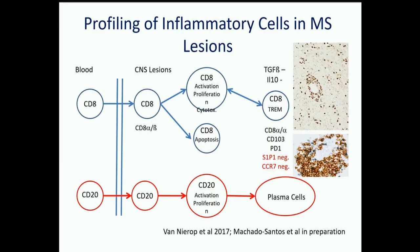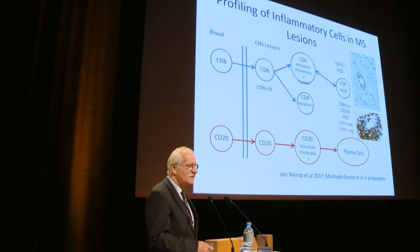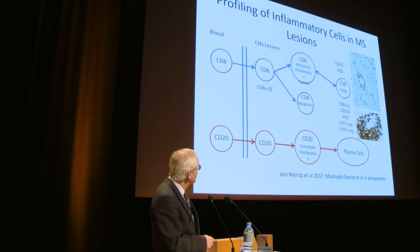Detailed phenotypic characterization of T cells reveals that in fresh lesions — also seen in viral encephalitis — the first wave of T cells entering is CD8 alpha-beta positive cells that show proliferation, activation, and expression of cytotoxic molecules. Some undergo apoptosis, but the remaining T cells take up a completely different phenotype: that of tissue resident effector memory cells, well characterized in skin lesions and apparently also in the brain.